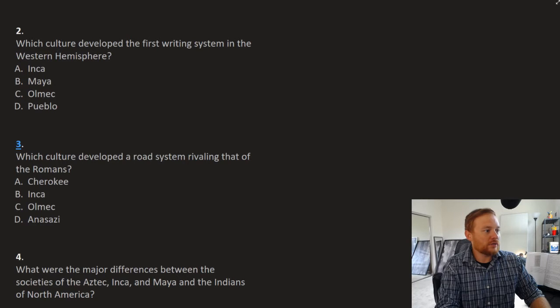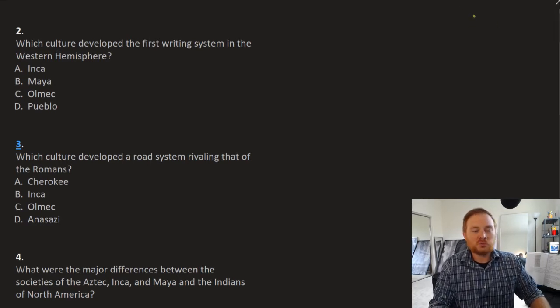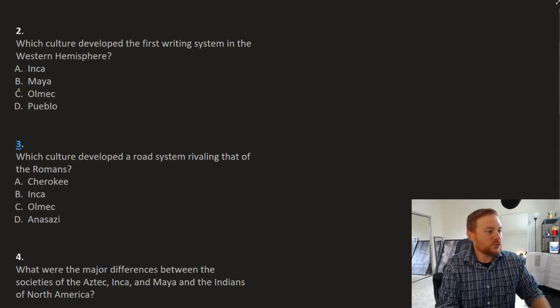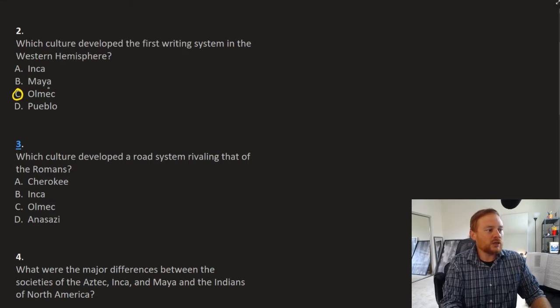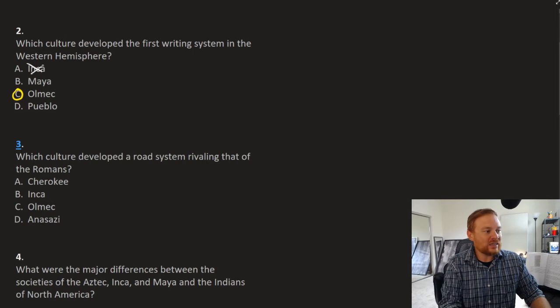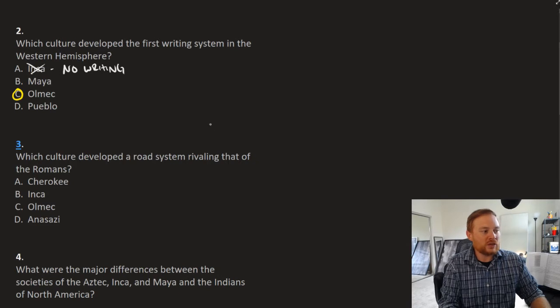Question number two, which culture developed the first writing system in the Western Hemisphere? The answer to this one is C, the Olmec. We should be able to immediately rule out the Inca. We want to recall that they had no writing, and you should know that the Inca had no writing in South America.